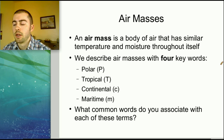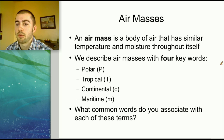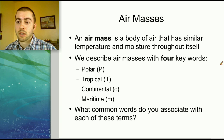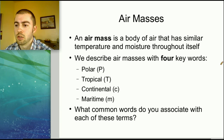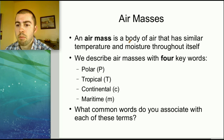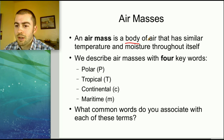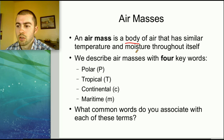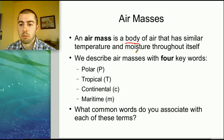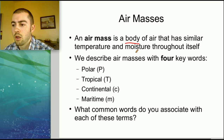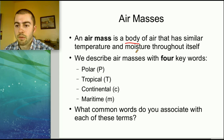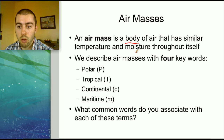In this video we're going to talk about air masses and basically try to explain how different types of weather are formed in the United States and possibly other regions of the world. An air mass is basically just one body of air — a big collection of air that all has a similar temperature and moisture. All of these different air masses have properties that are the same throughout the whole air mass.